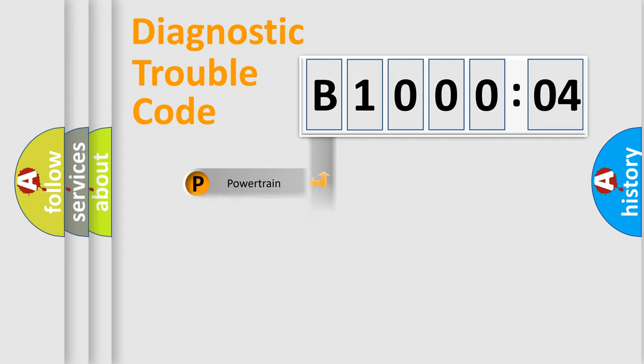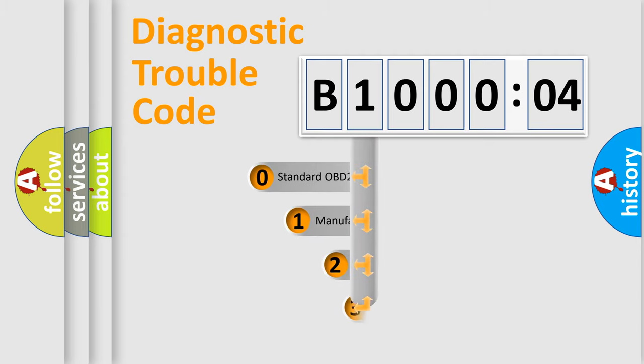Powertrain, Body, Chassis, Network. This distribution is defined in the first character code.